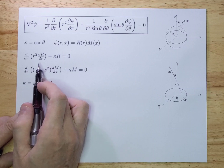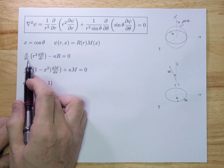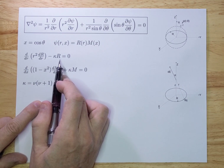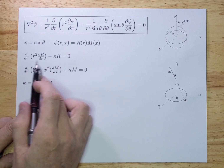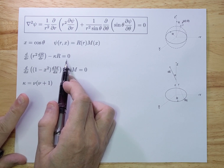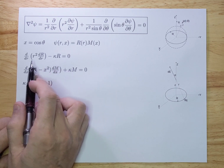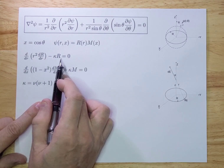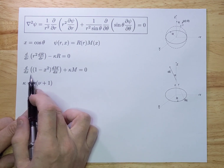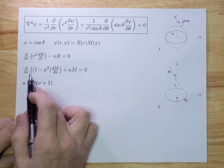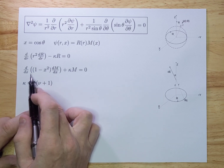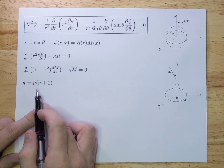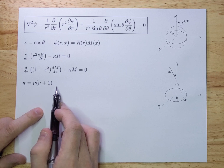You get two differential equations that are no longer partial. This one only depends on R and this one only depends on x. We also define K, which is mu times mu plus 1.